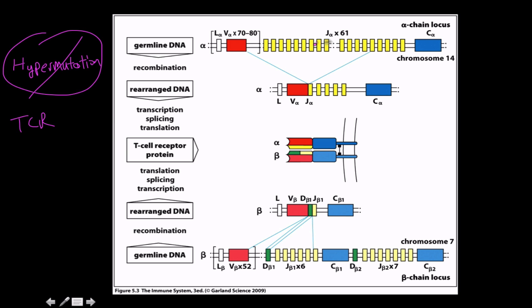I like this picture here for the alpha chain locus. For beta, there are D segments here because beta is homologous to the heavy chain, and alpha is homologous to the light chain so there's just a V and J regions.